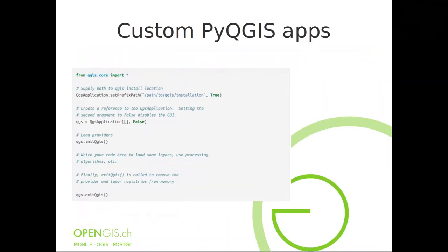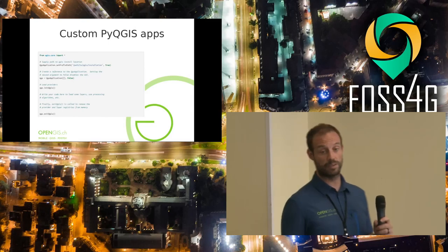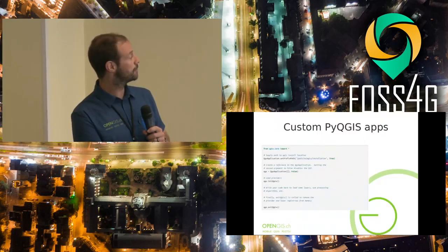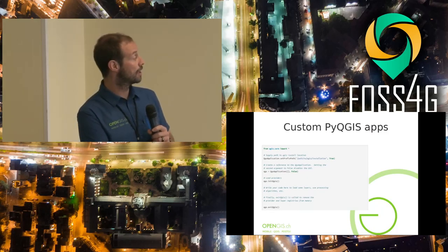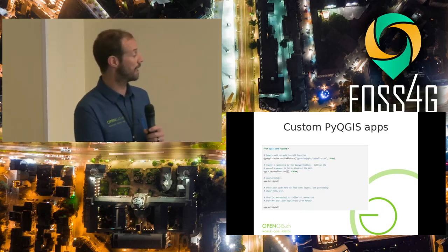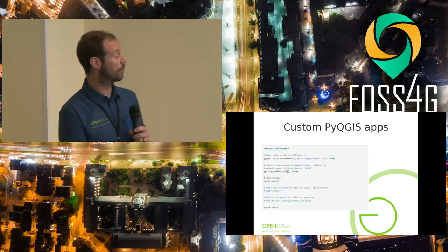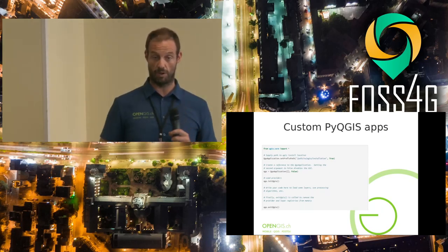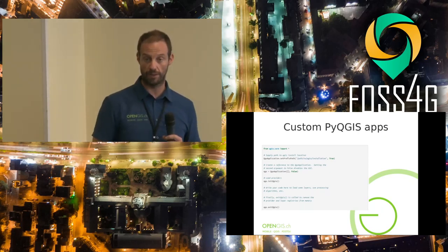The last and most complex thing you can do is build your own Python application. You do 'from qgis.core import *', then set up two or three things: create a QGIS application, call the initQgis method on that application, and eventually call exitQgisApplication. In between, you do whatever you want with your Python application.